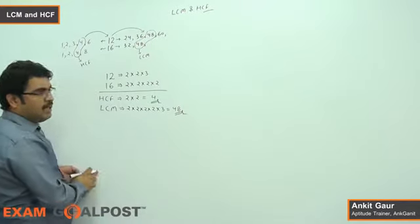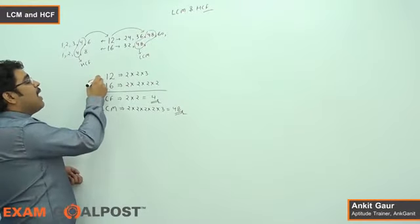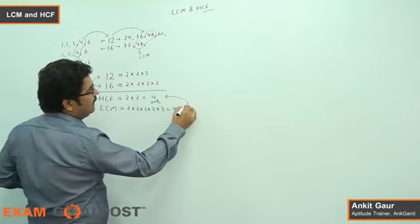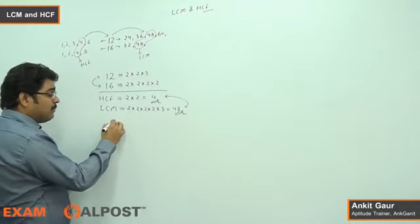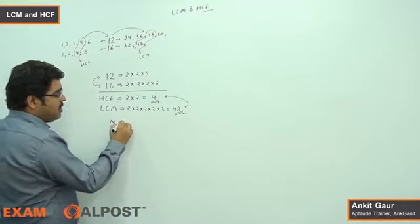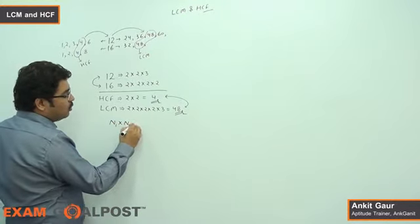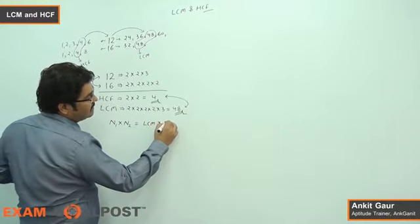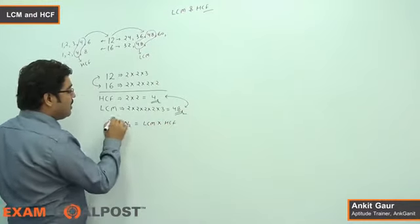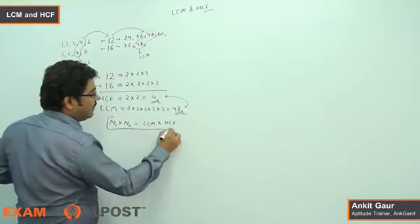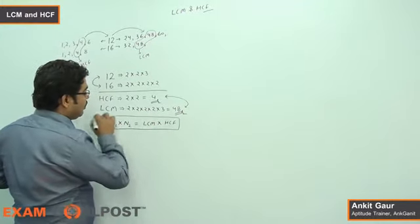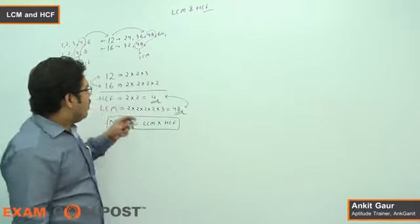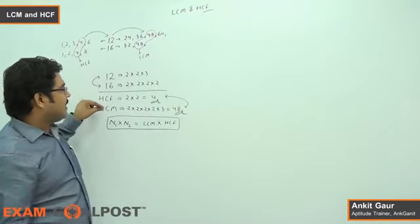One more important point: 12 × 16 is the same as 4 × 48. That means the product of two numbers equals LCM multiplied by HCF. So n1 × n2 = LCM × HCF. The product of two numbers is always equal to LCM multiplied by HCF.